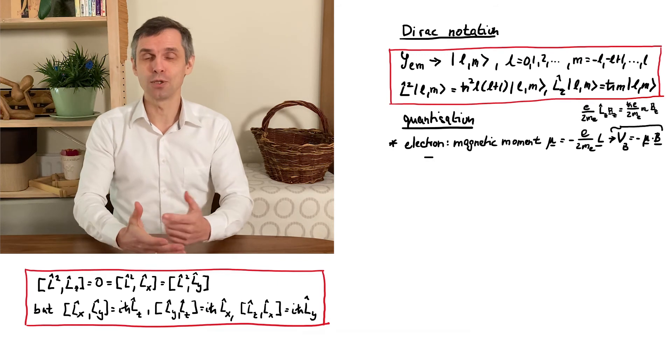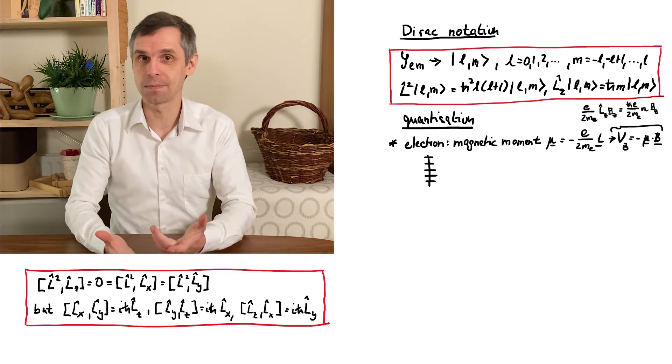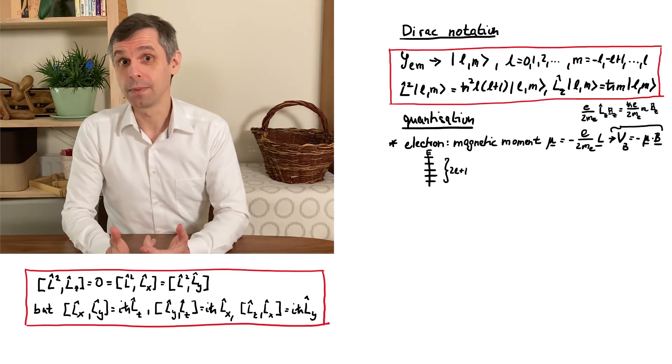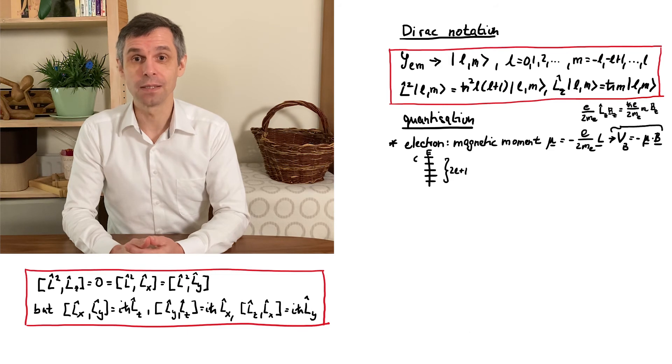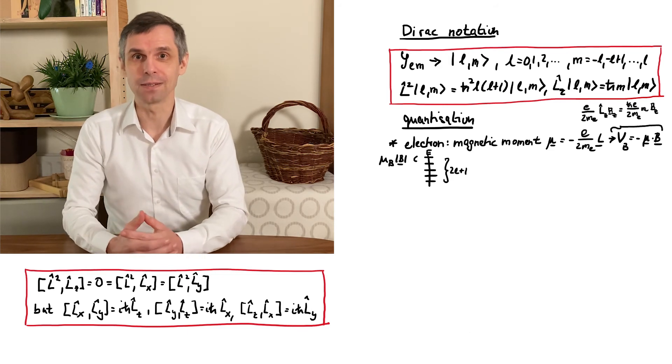So for any value of L, we get two L plus one distinct levels, the degeneracy has been lifted. Their spacing is uniform and proportional to the magnetic field, with a factor that involves fundamental constants. This is known as the Bohr magneton.